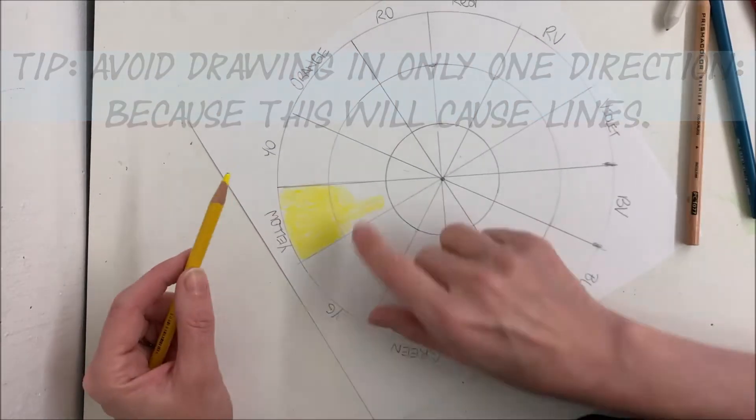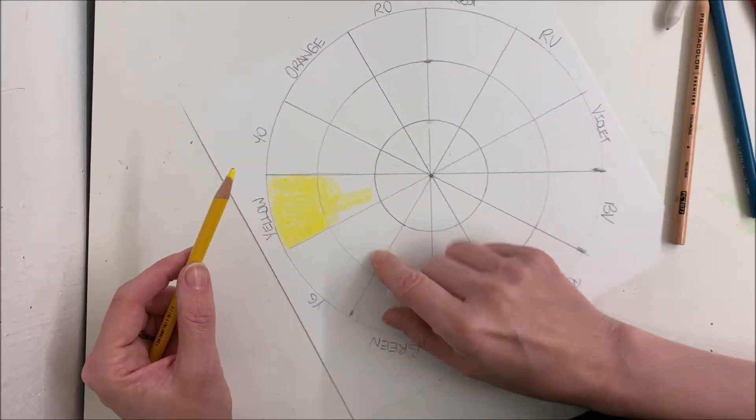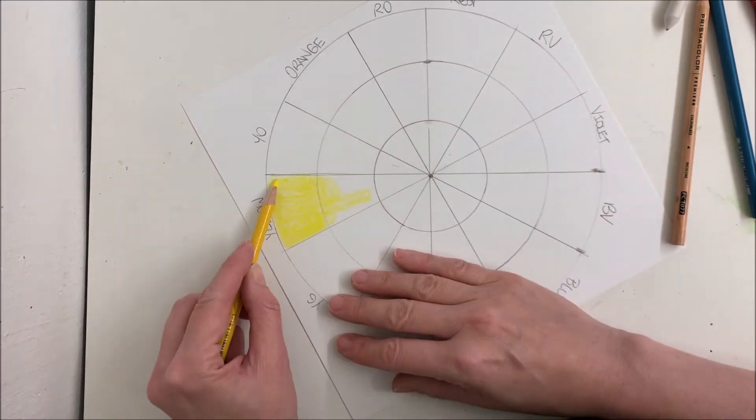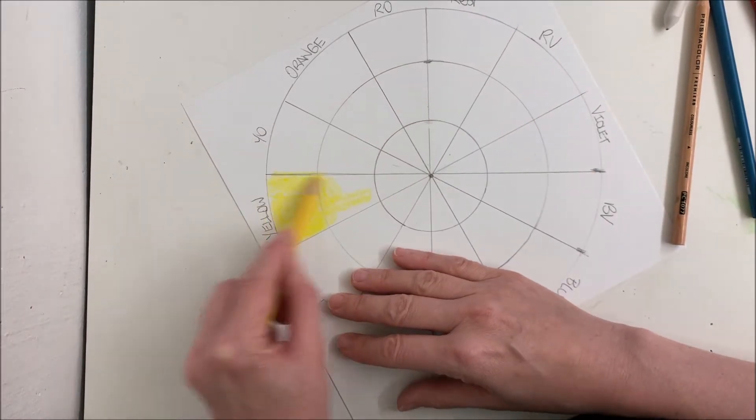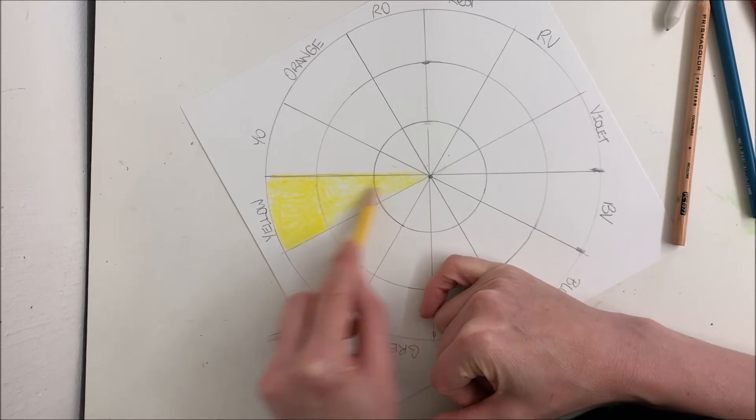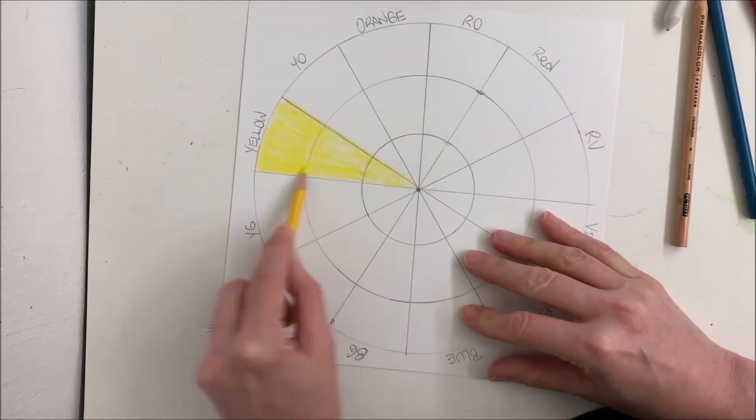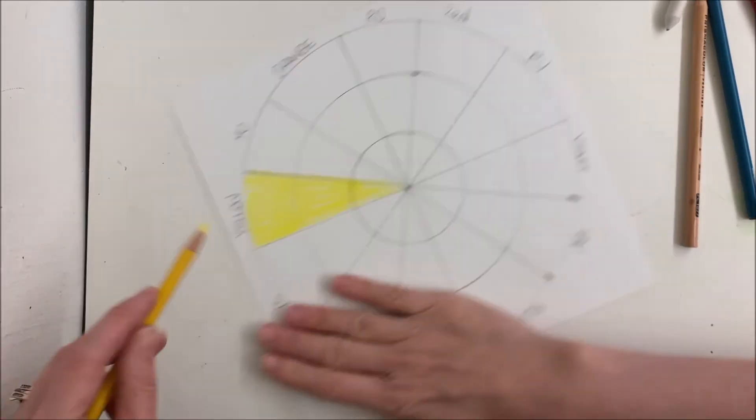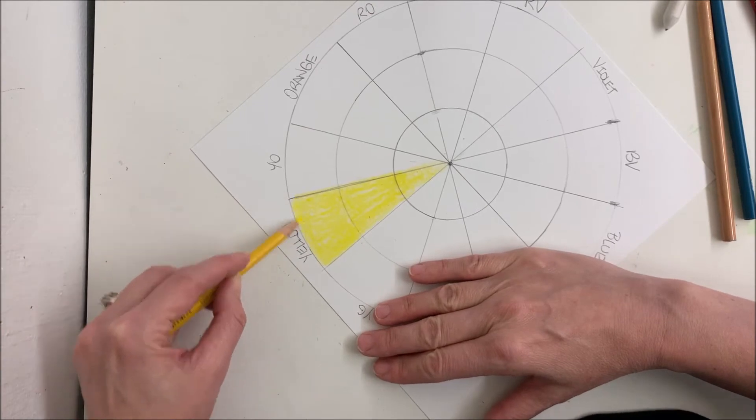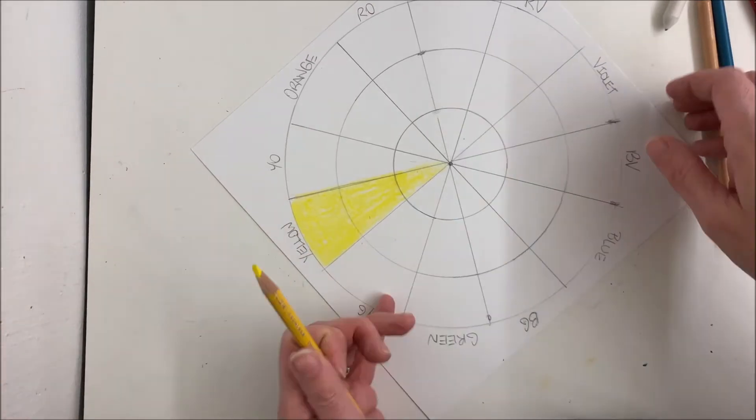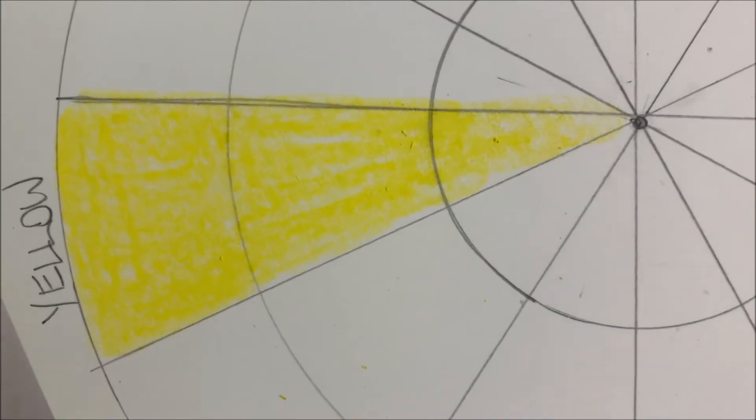Also keep in mind that your pencil lines will show through. You will want your pencil lines to be light. For my purposes, I needed them to be dark so that you could see them on the video. Now I've made my first pass with the edge of my colored pencil. I can still see white through. It's not solid yet.